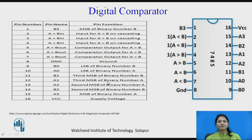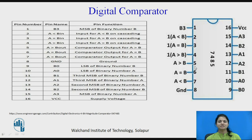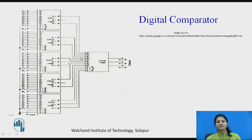When the number to be compared is more than 4 bits, we can cascade this digital comparator. Multiple 7485 ICs can be connected in cascade — as many as needed — and then one more comparator combines the cascaded outputs to produce the final comparison result.